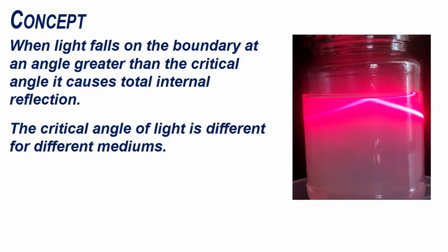When light falls on the boundary at an angle greater than the critical angle, it causes total internal reflection. The critical angle of light is different for different media.